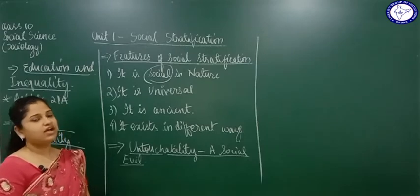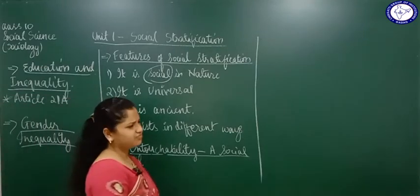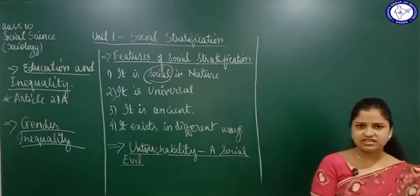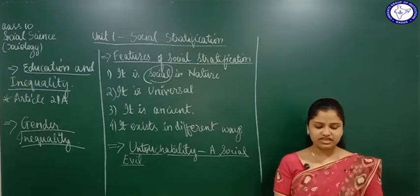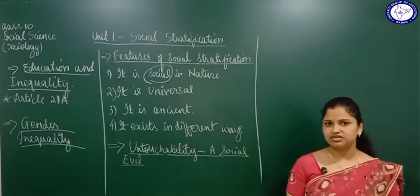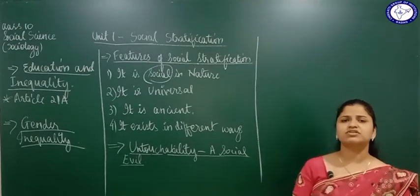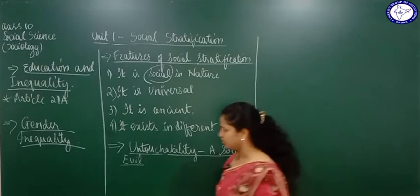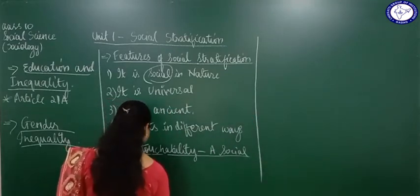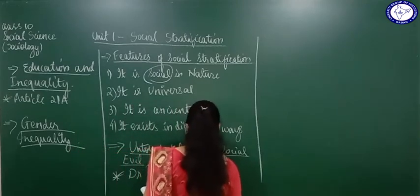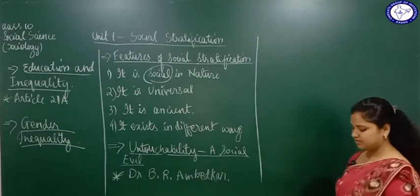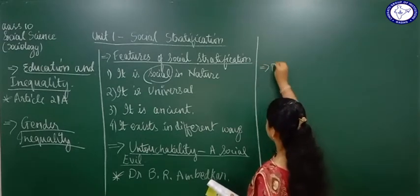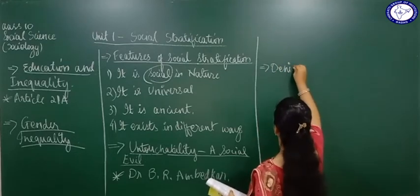Later, as time passed, some untouchables like Dr. B.R. Ambedkar got some education, realized what was happening was very wrong, and fought to change it. Dr. B.R. Ambedkar went to other places, got education, and tried his best to remove untouchability from India. Another problem untouchables faced was denial of property — they were not allowed to own any property or grow crops on fields because nobody would buy or use what they produced.